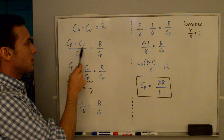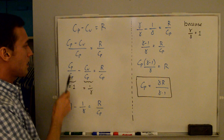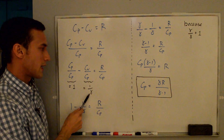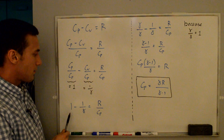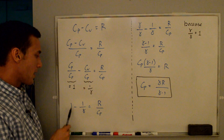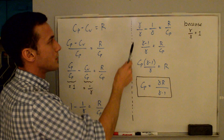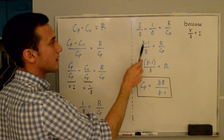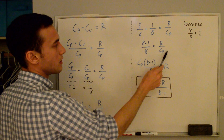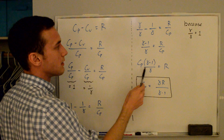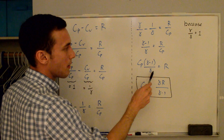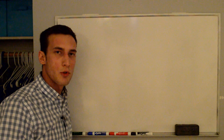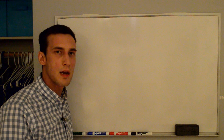Now we derive cp. Starting again with cp minus cv equals R, divide both sides by cp: 1 minus cv/cp equals R/cp. Since cv/cp equals 1/gamma, we have 1 minus 1/gamma equals R/cp. Substituting gamma/gamma for 1 gives a common denominator: (gamma minus 1)/gamma equals R/cp. Solving for cp gives the final expression: cp equals gamma R over gamma minus 1. This video covered derivations of specific heats that will be useful in future gas dynamics videos. Thanks for watching.